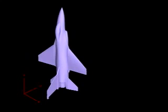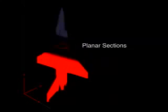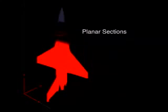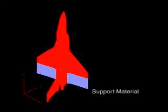Once the model is oriented, the software divides the model into evenly spaced planar sections, each measuring as small as a few thousandths of an inch. Supports are then generated for overhanging sections.